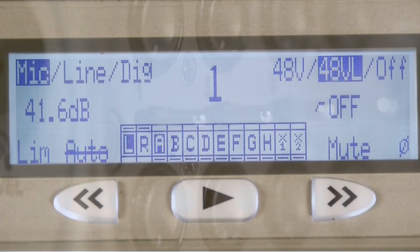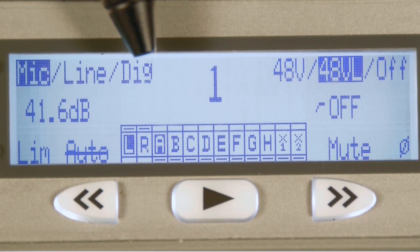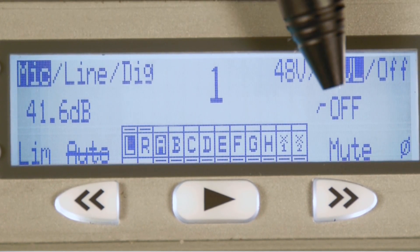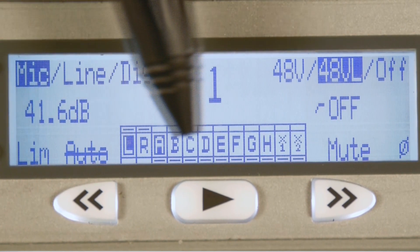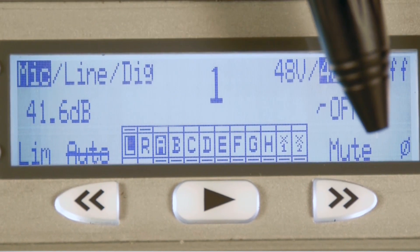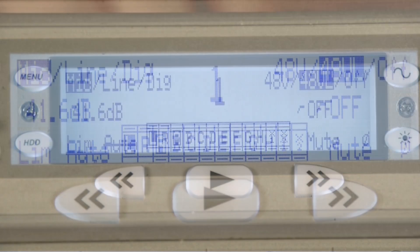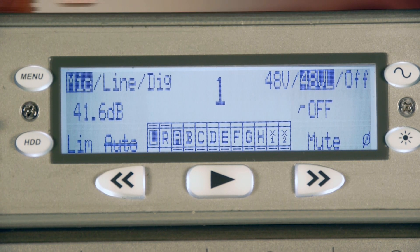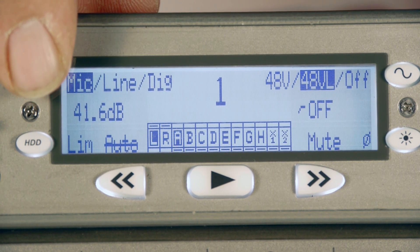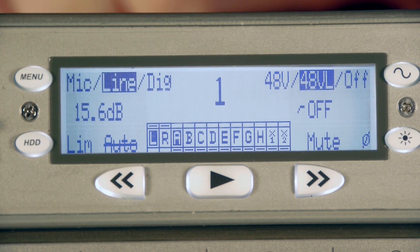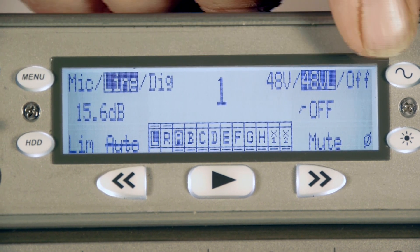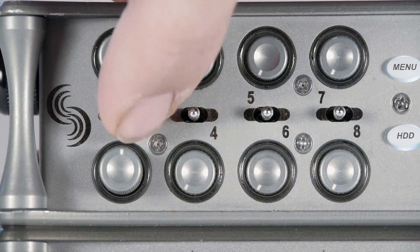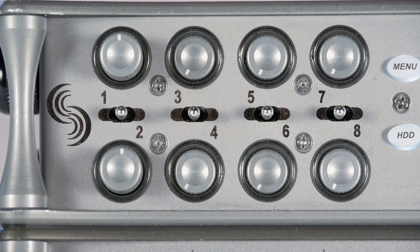To access each of the input settings, move the input selector toggle switch to its corresponding channel. This window will allow you to access your mic, line, or digital input selection, activate 48 phantom power, high pass filter, input to track routing, limiter, and polarity reversal. To adjust these settings, simply press the soft key closest to the setting option in the window. For example, to change from mic to line level, you would press the menu soft key. Or to activate 48 phantom, you would press the tone button. To exit, simply toggle the input selector switch in the same direction of input.